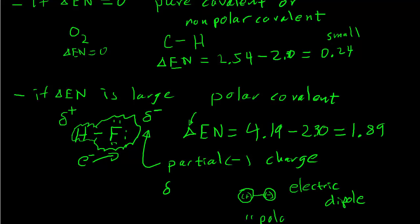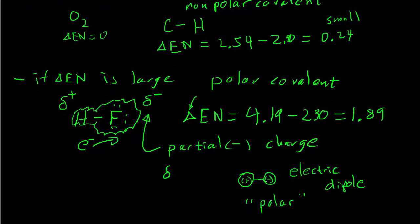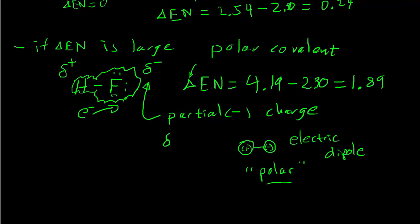The word 'polar' means something that has two poles — like magnets, which have a north and south magnetic pole, or the Earth's polar regions. HF has a positive pole and a negative pole due to unequal electron sharing. So electronegativity helps us determine bond types and think about the distribution of charge in a molecule and where there will be a buildup of electron density.